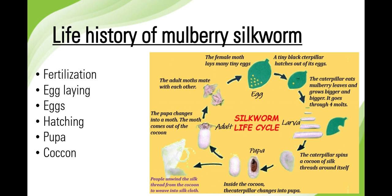The caterpillar stops feeding and moves to a corner among the leaves, and secretes a viscous fluid through the silk gland. The secreted fluid comes out through the spinneret and takes the form of a long fine thread of silk, which hardens on exposure to air and wraps around the body of the caterpillar in the form of a covering called a cocoon.